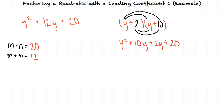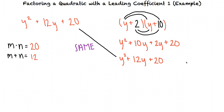If we combine like terms, we get y squared plus 12y plus 20, which is the same as our original quadratic expression. This tells us that we factored correctly and that 2 and 10 were the right numbers for m and n.